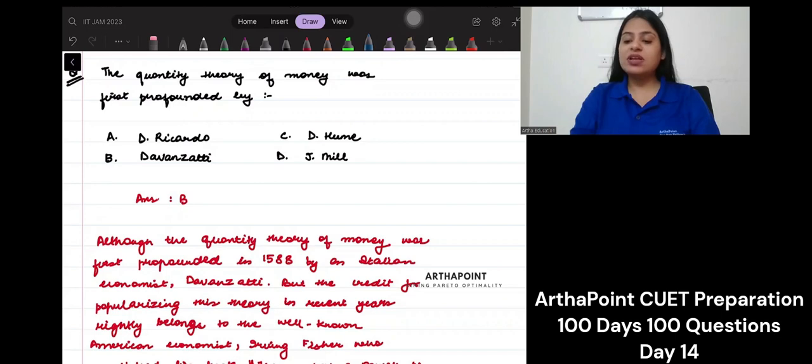So it says the quantity theory of money was first propounded by: A. Ricardo, B. Devinzati, C. D. Hume, and D. J. Mill. The correct answer to this question is B.